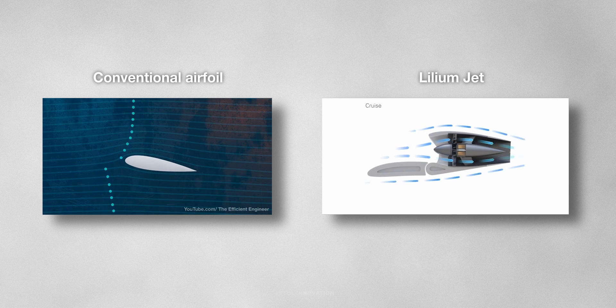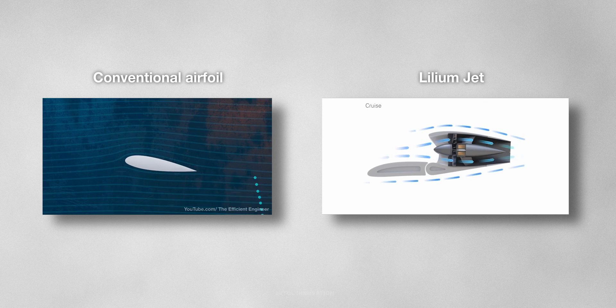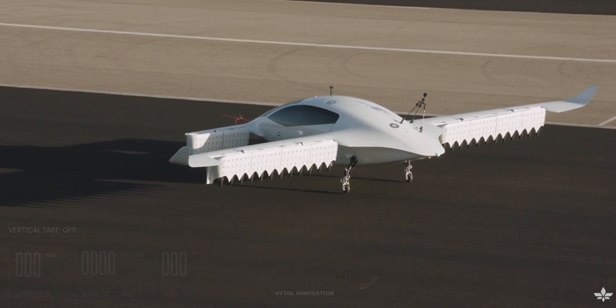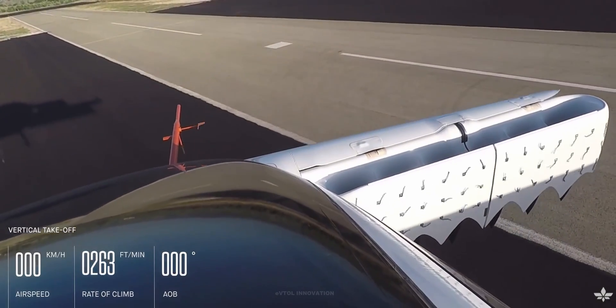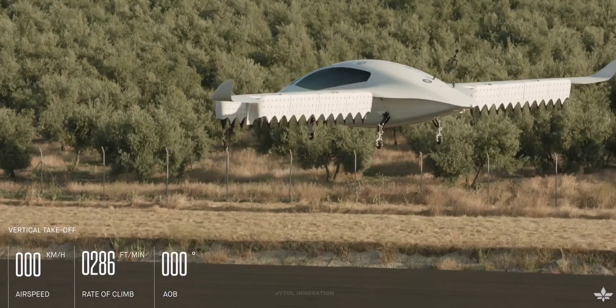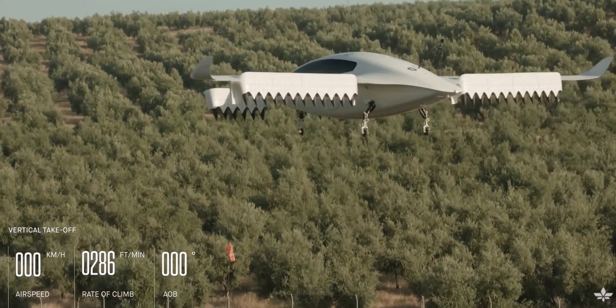Lilium's technology demonstrator airplane recently achieved transition on the main wing for the first time. Transition represents the technically challenging phase between vertical lift and the highly efficient wing-borne lift. It's the most difficult maneuver that an eVTOL aircraft can undertake.